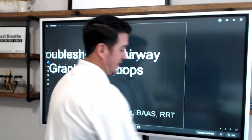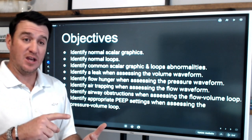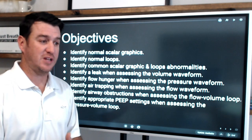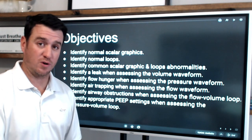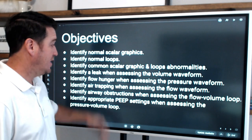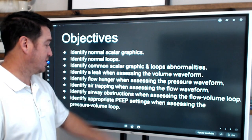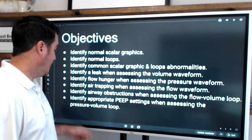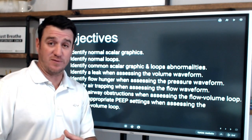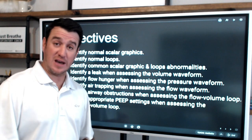Our objectives include recognizing and identifying normal scalar graphics and normal loops. Before we can find what's wrong, we need a solid base knowledge of what normal looks like. We'll define common scalar graphic and loop abnormalities: identifying a leak on the volume waveform, flow hunger on the pressure waveform, air trapping on the flow waveform, airway obstructions on the flow-volume loop, and appropriate PEEP settings on the pressure-volume loop. We'll cover all five waveforms and loops.